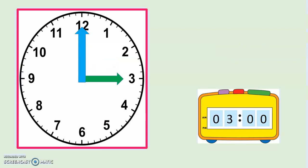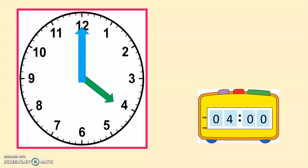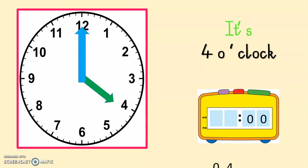It is 3 o'clock — digital time 03:00. Afternoon time will be 15:00. It is 4 o'clock — big hand on the 12, short hand on the 4. Digital time for the morning is 04:00, and the afternoon is 16:00, meaning 16 hours have gone past.